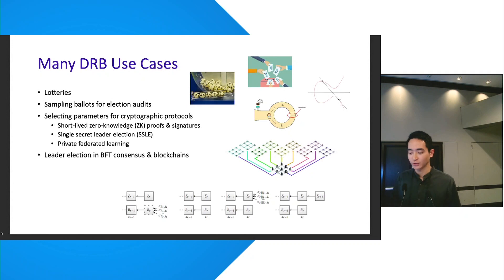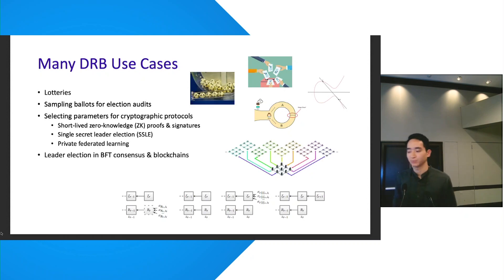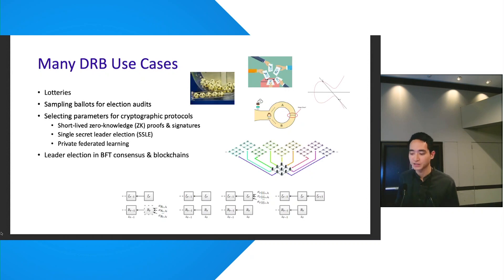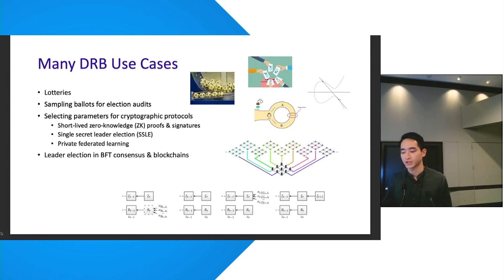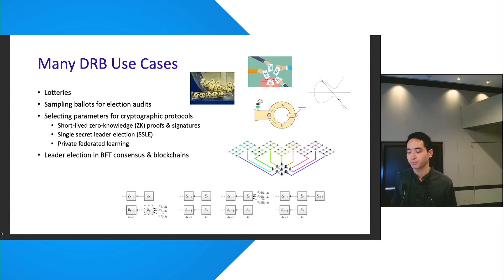Other than lotteries or leader election in BFT consensus and blockchains, there are other use cases for DRBs: sampling ballots for election audits, selecting parameters for other cryptographic protocols such as short-lived zero-knowledge proofs and signatures, and single-secret leader election, private federated learning, etc.